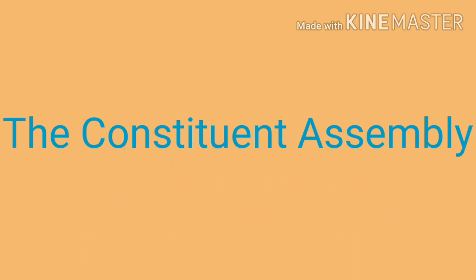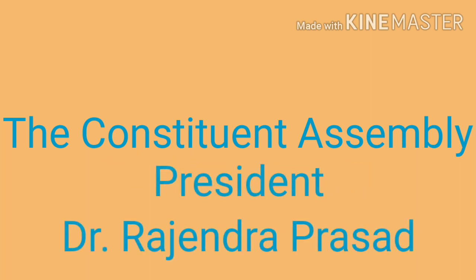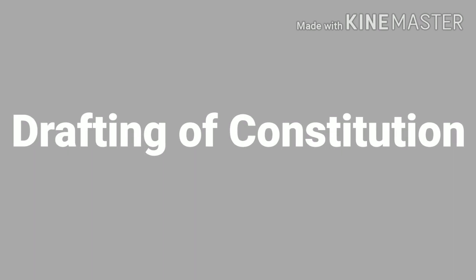What is the Constituent Assembly? The Constituent Assembly had 299 members who wrote the Indian Constitution. A president of the Constituent Assembly was elected. After this meeting, a committee was formed to draft the Constitution — this is the framework or the outline for it. It had eight members, and Dr. B.R. Ambedkar became the chairman of the drafting committee.